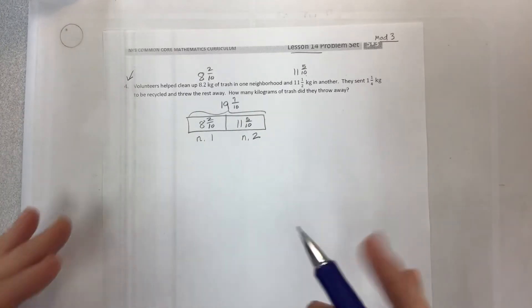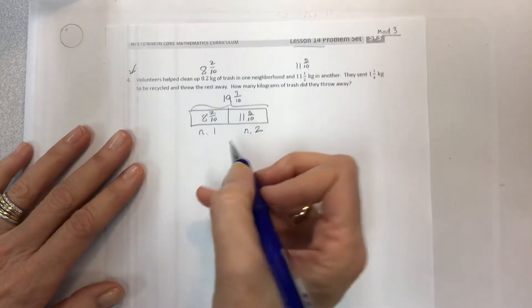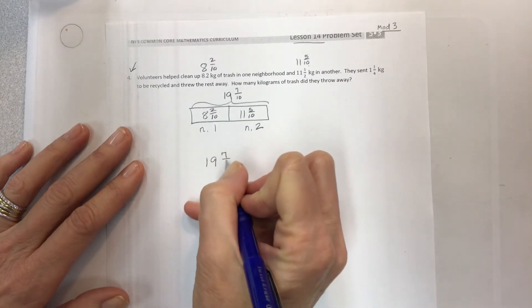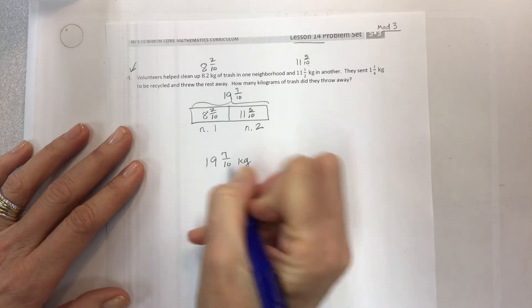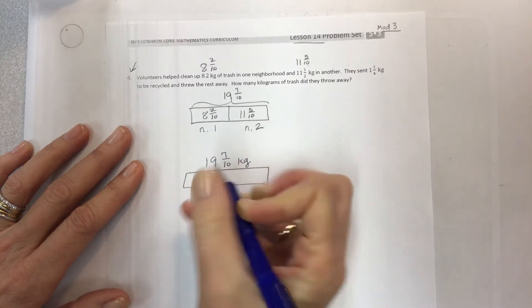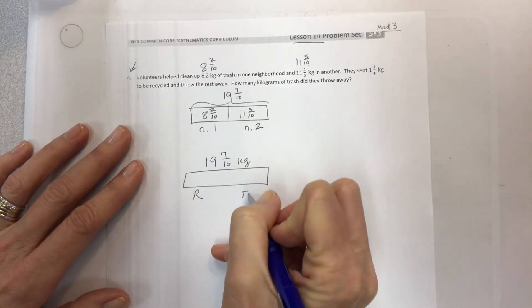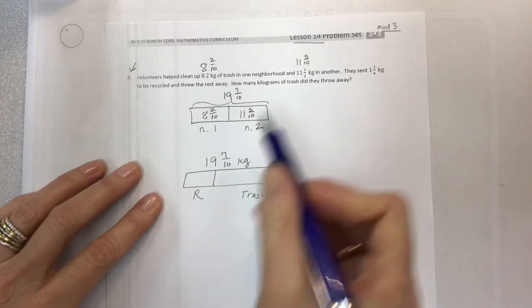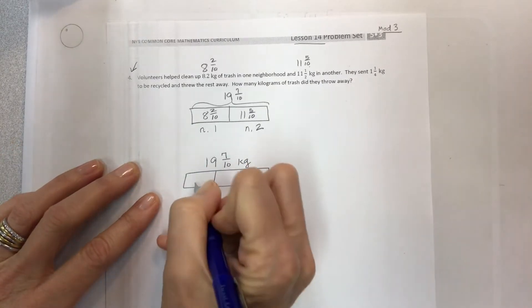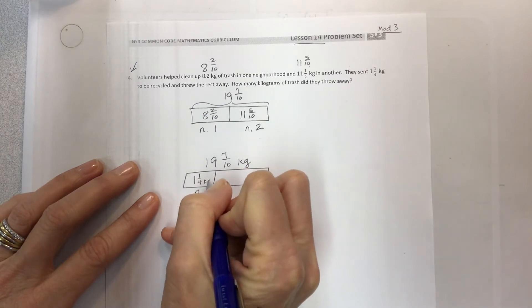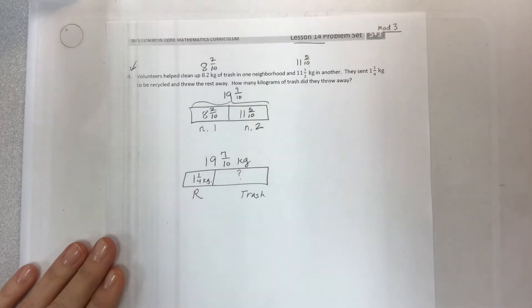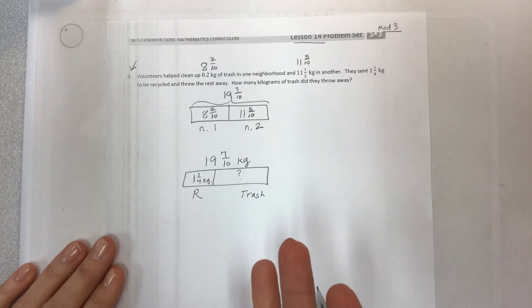But what do we do with this trash now? That is going to take our 19 and 7 tenths kilograms of trash and we're going to have some go to the recyclers and some go just for trash. And so they tell you that we've got 1 and 1 fourth kilograms that go to be recycled and mystery number when we throw it away.